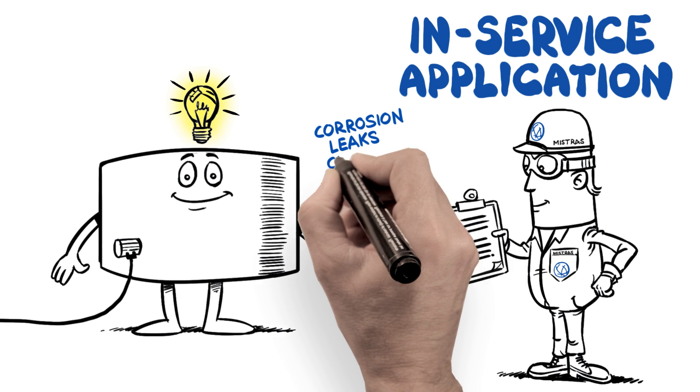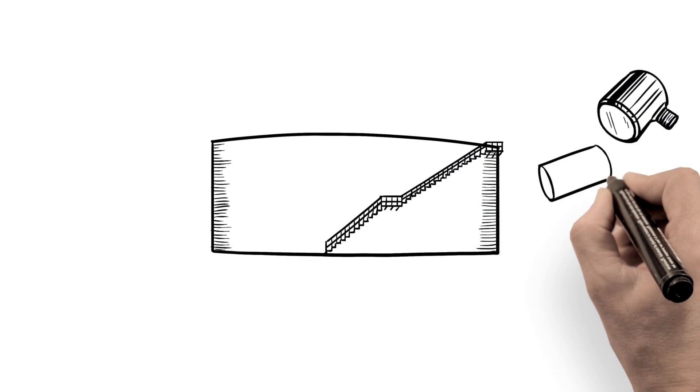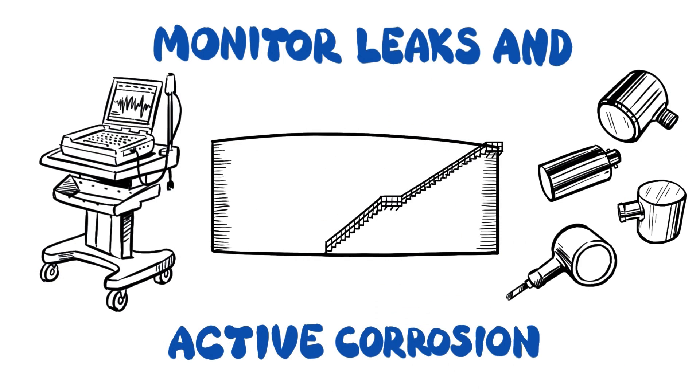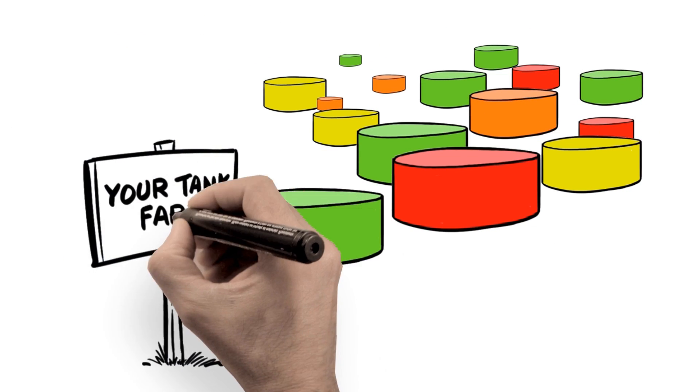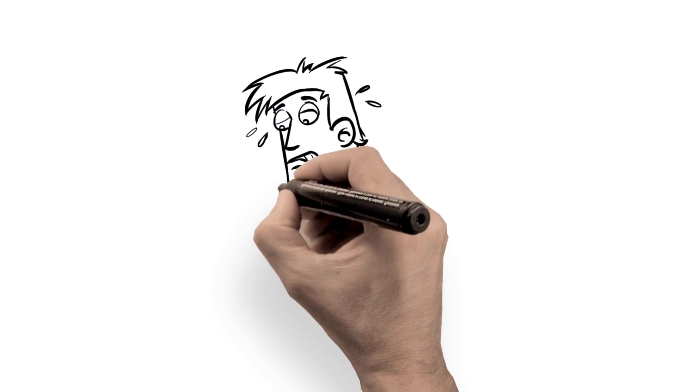So by mounting sensors on the outside of tanks, we can monitor for acoustic signals of active corrosion and leaks. Tank conditions are then graded, allowing us to sort good tanks from bad.